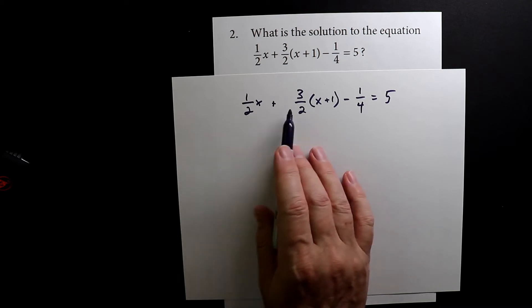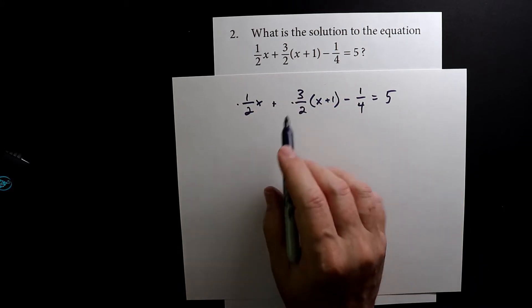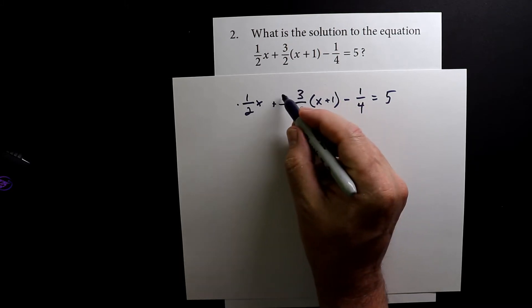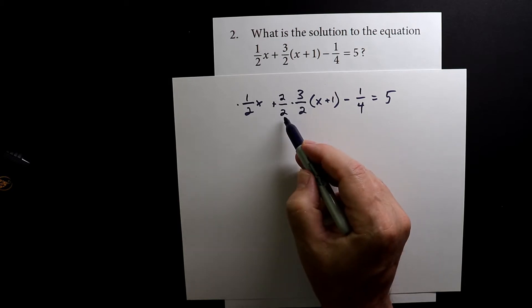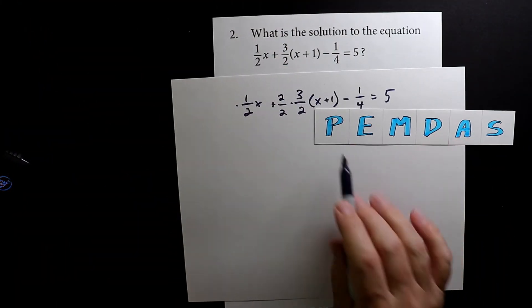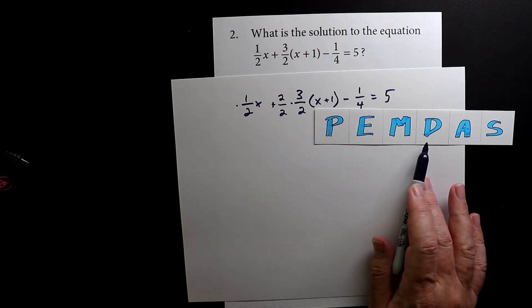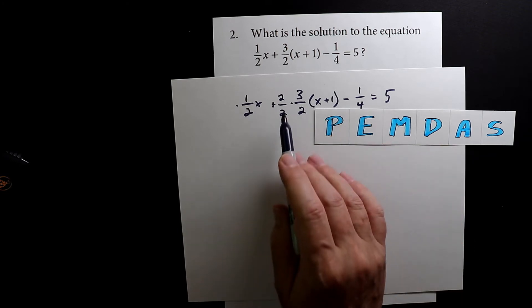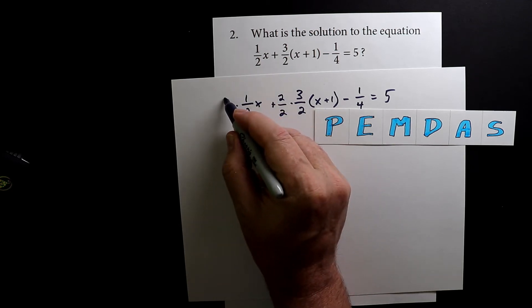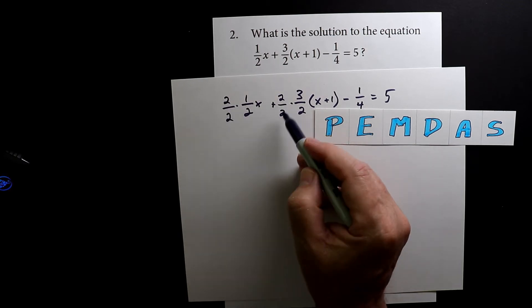So the reason I created space in here is because I want to multiply both of these by one. But I'm not just going to put a big one there, I'm going to put it as a fraction. So if I multiply three over two by two over two, two over two equals one. Now I also want to convert this one over two so it has a four on the bottom. I'm going to multiply it by two over two because two over two equals one.